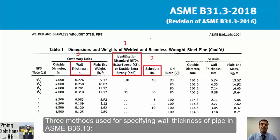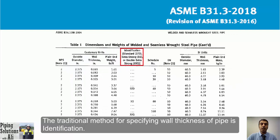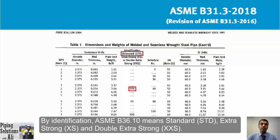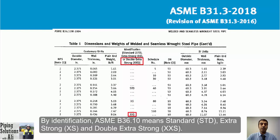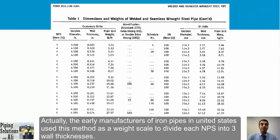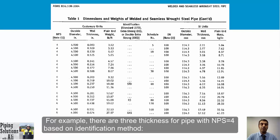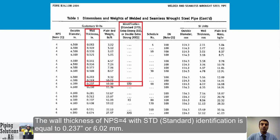Three methods are used for specifying wall thickness of pipe in ASME B36.10. The traditional method is identification: Standard (STD), Extra Strong (XS), and Double Extra Strong (XXS). Early manufacturers of iron pipe in the United States used this method as a weight scale to divide each nominal pipe size into three wall thicknesses. For example, NPS 4 has three thicknesses under this method.